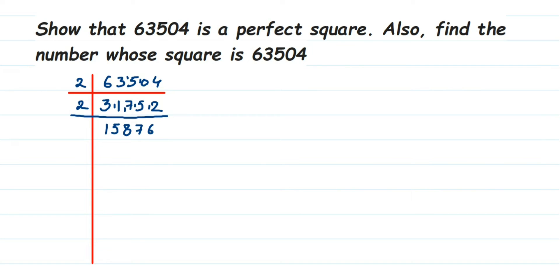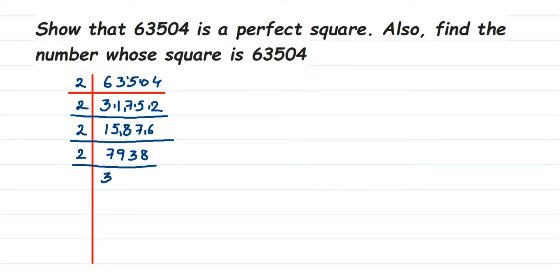This number is again even, so it goes into 2: 2 sevens are 14, giving us 3969. Continuing, 2 nines are 18, and 2 sixes are 12. We keep dividing by 2 — 2 nines are 18 — until the result is an odd number and can no longer be divided by 2.